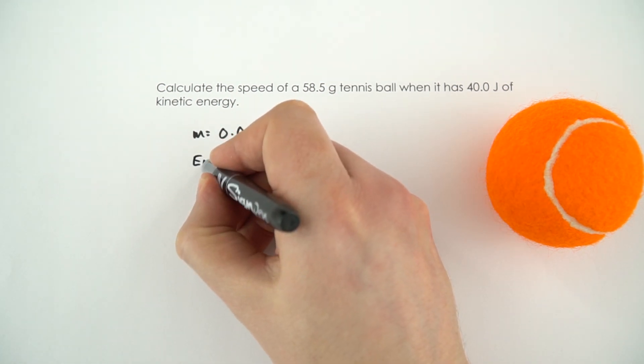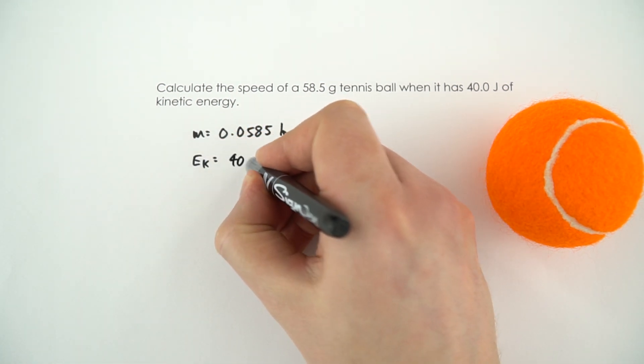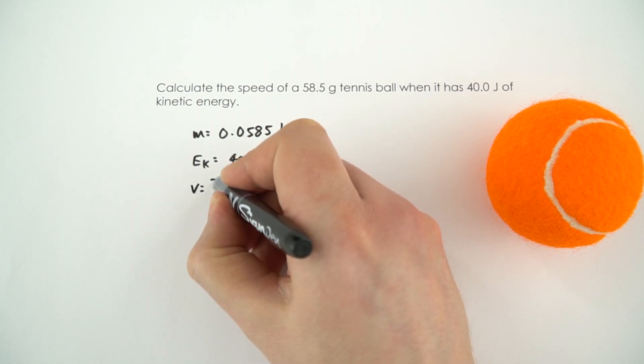So the mass is equal to 0.0585 kilograms. The kinetic energy, Ek, is equal to 40.0 joules, but we don't know how quickly it's moving.